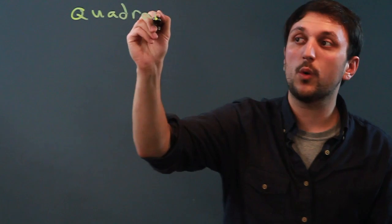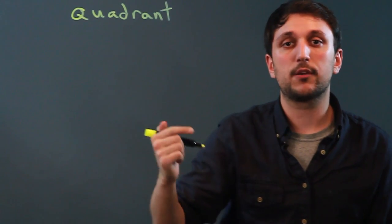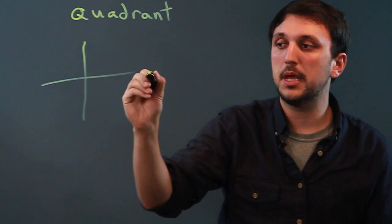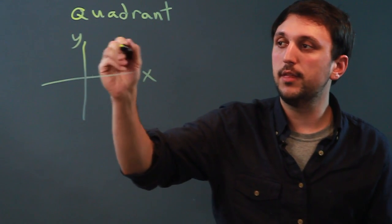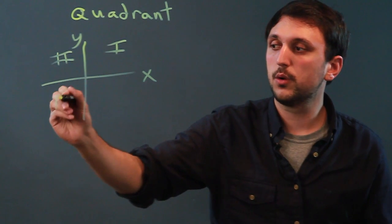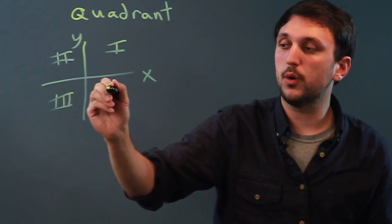So first, let's think of the word quadrant. Now when you see the word quadrant, we're referring to the XY plane or the coordinate plane. So here is our XY plane, always label the axes, and this quadrant is quadrant one, this quadrant is quadrant two, quadrant three, and quadrant four.